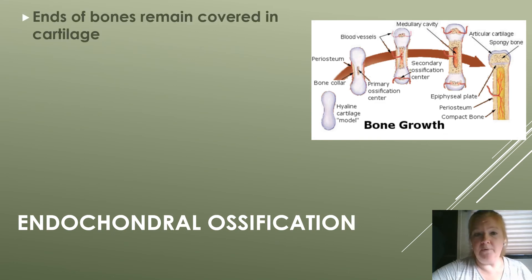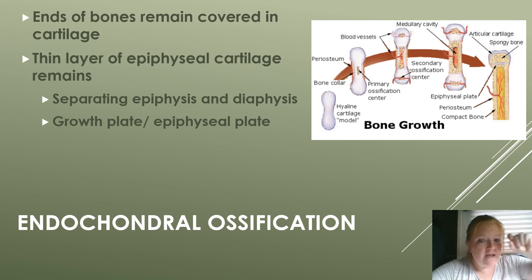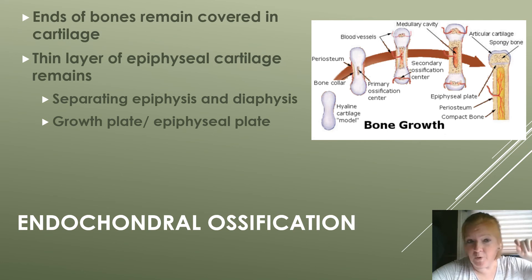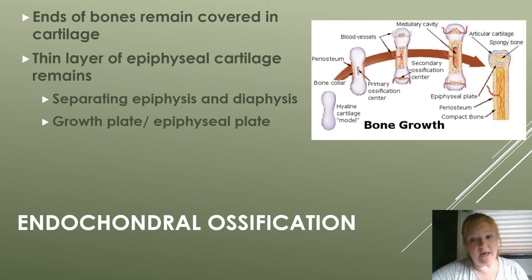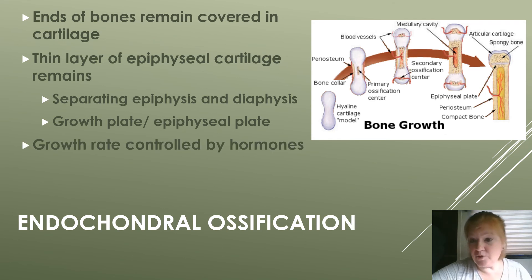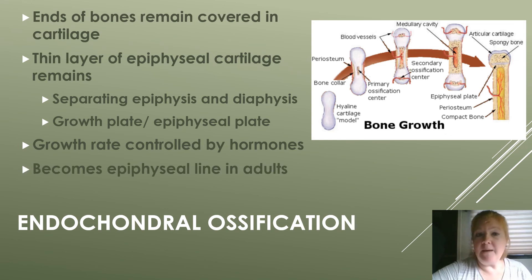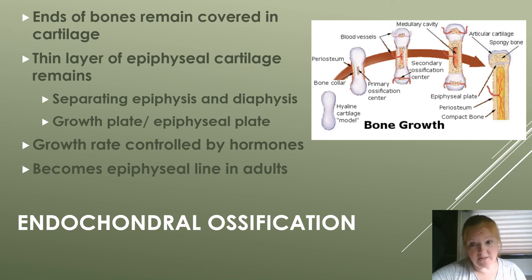The ends of the bone remain covered in cartilage. There's a thin layer of cartilage called the epiphyseal plate, or growth plate, that separates the epiphysis and diaphysis. This is a remnant of how the bone was formed. The growth rate is controlled by hormones, and the epiphyseal plate becomes the epiphyseal line in adults.